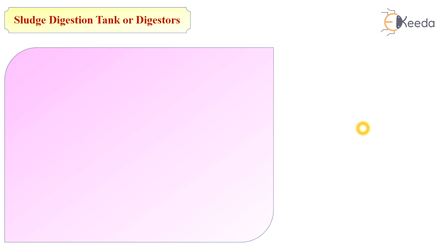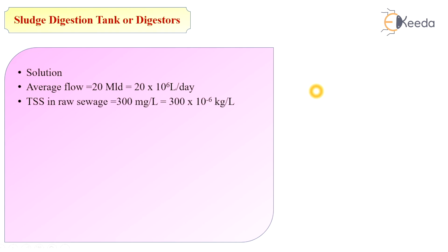Let's start solving the problem step by step. The average flow given is 20 million liters per day, which equals 20 × 10⁶ liters per day. The total suspended solids in raw sewage given in the problem is 300 mg per liter, which equals 300 × 10⁻⁶ kg per liter. Therefore, the mass of total suspended solids in 20 million liters of sewage per day is calculated.